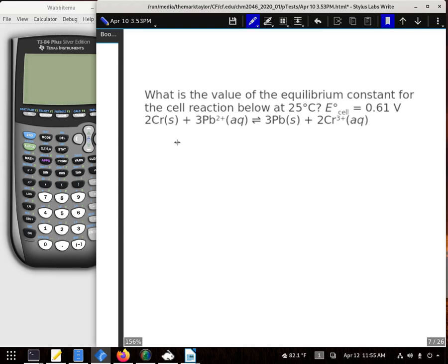Alright, so our equation that we use on this, E-aught for any cell is equal to RT over NF times the natural log of K. And we're going to be solving for our K.